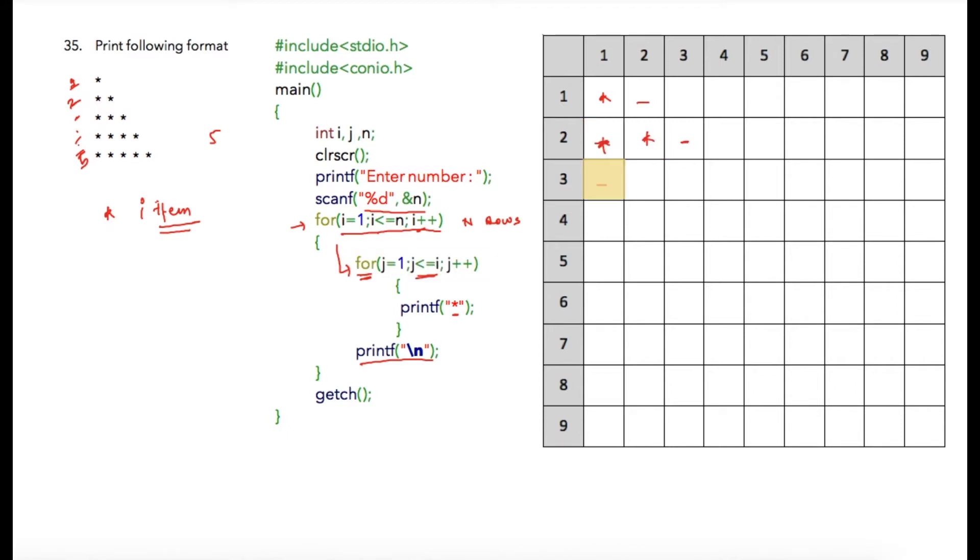Once the for loop terminates, the cursor will move to the next line. This process will be continued for five rows and the final output would be this. At the end of the program, the cursor will be at this location.